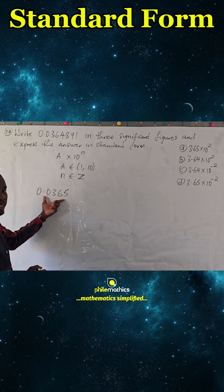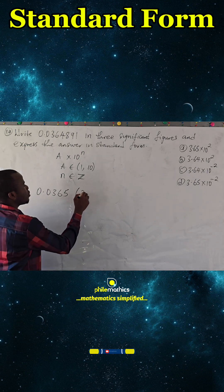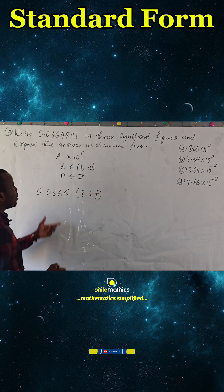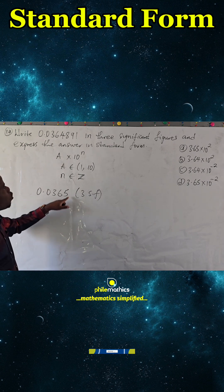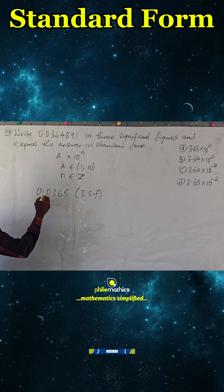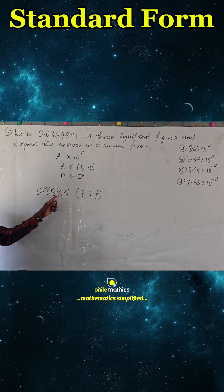Five. So this is the correct three significant figures: 0.0365. But this is not where it stops. We said we should express our answer in standard form, so we have to put it in this form. We take it one, two, such that it is between...